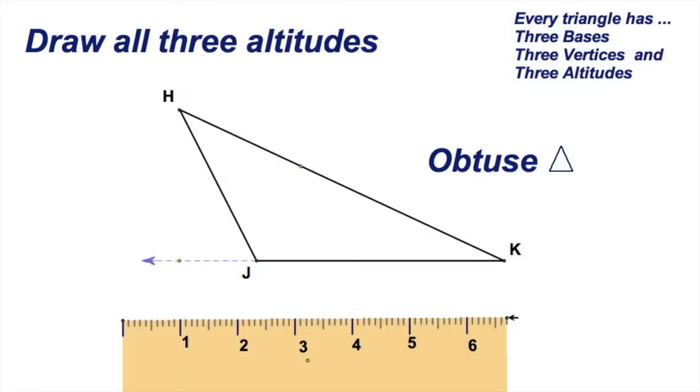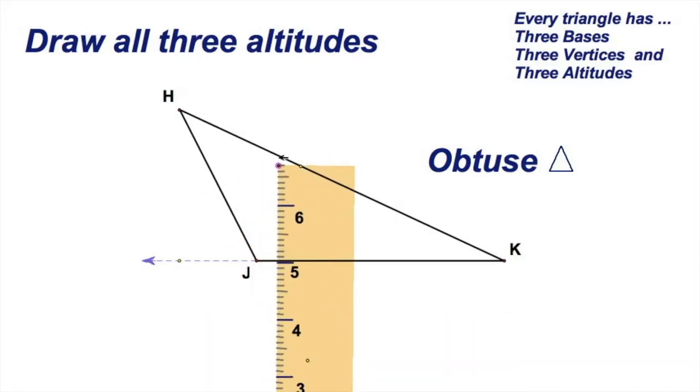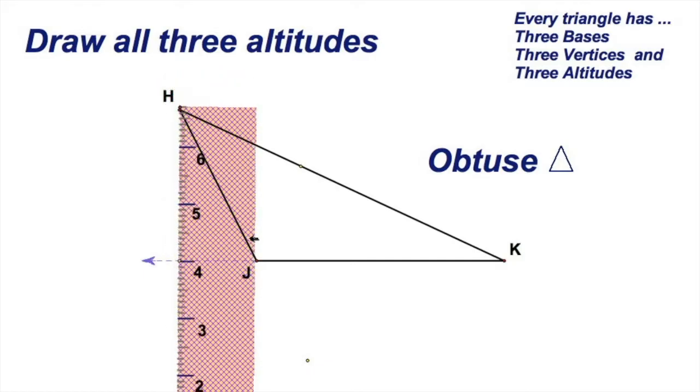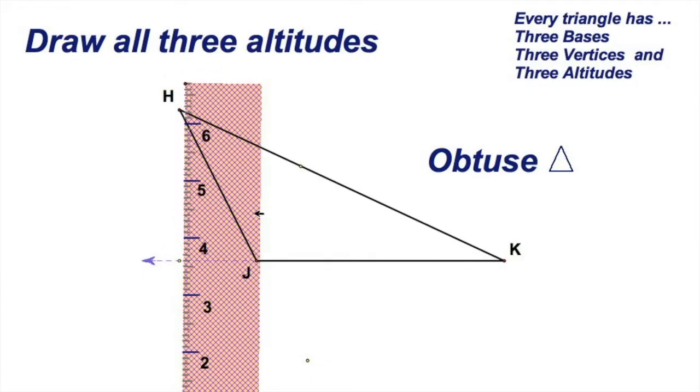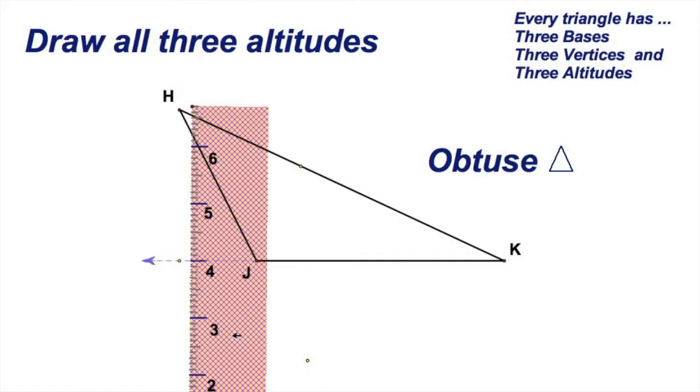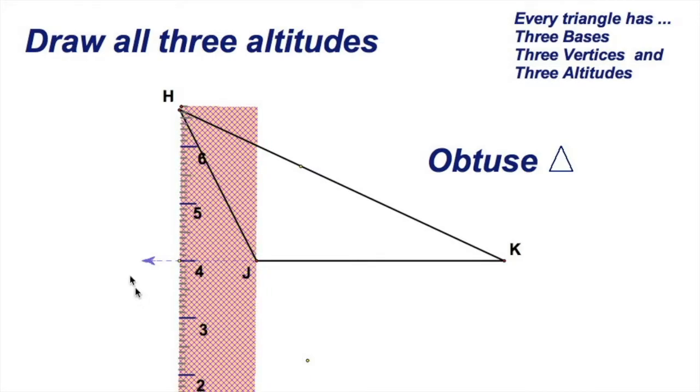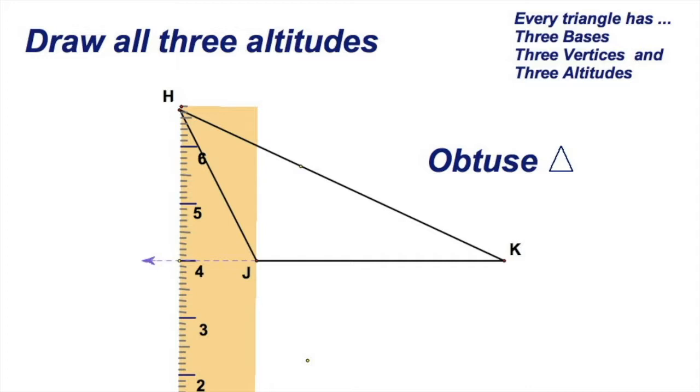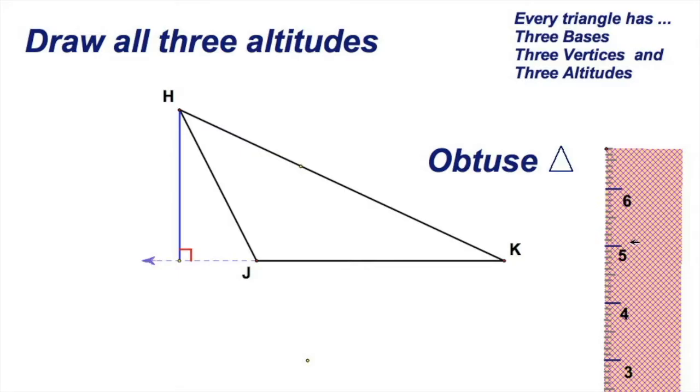Now that's the extension of the side. So now when I turn my ruler this way, I'm going to try to square it up so I can draw it nice. Let me see, square it up like that, slide it over and there you go. Right there. Draw that in. Nice.